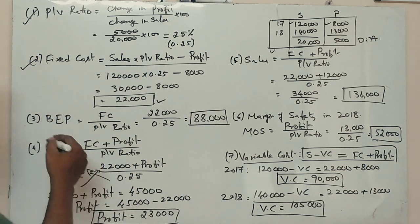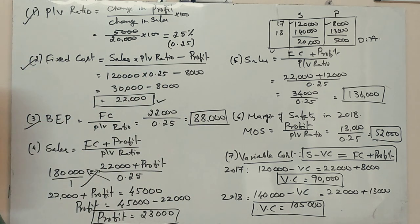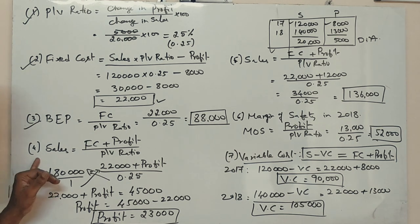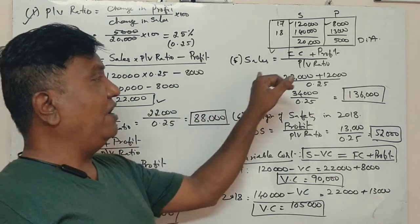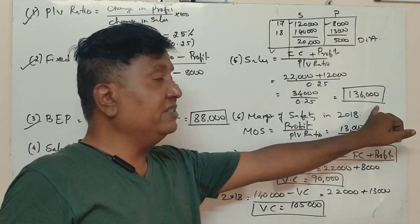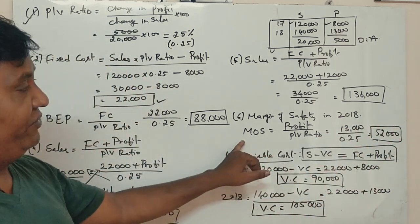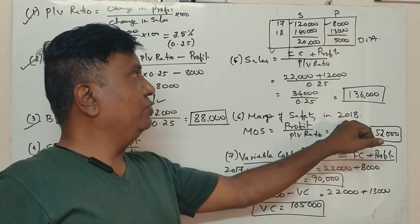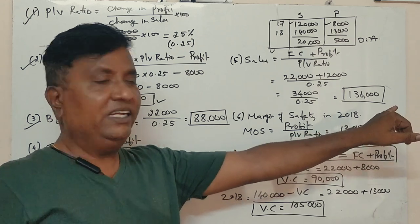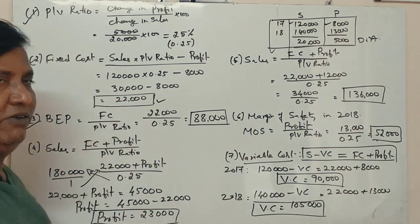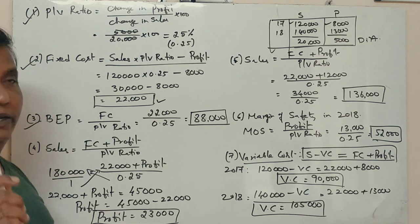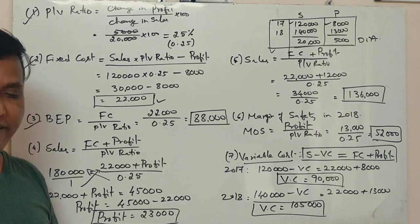If you are solving this question, always we should start with PV ratio, then fixed cost, calculate with the help of the formula. Then BEP calculate. Third question is about profit when sales is given. Fifth question is about sales when profit is 12,000. Fifth question is about margin of safety in 2018. Variable cost for the two years.